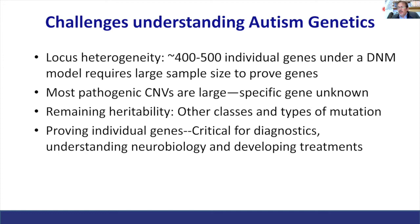It is critical to identify individual genes with confidence. First, for diagnostics: early intervention is key, and knowing the genes allows us to identify even prenatally whether a child has a higher likelihood of being affected. More importantly, knowing the genes sheds light on the protein pathways that interact during neurodevelopment. Knowing which pathways and which children fall into different pathways would in principle allow us to develop customized treatments. We're a long ways from having treatments for specific subtypes, but the foundation is making sure we understand the genetic components.